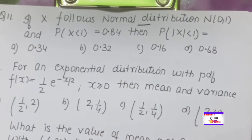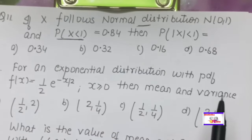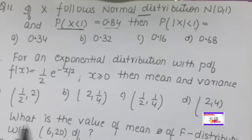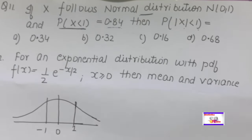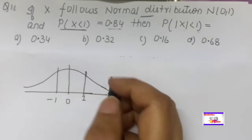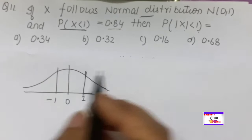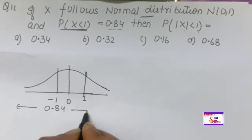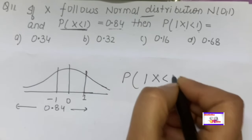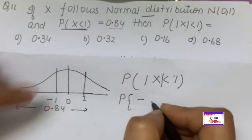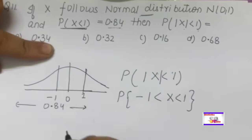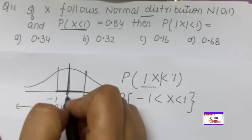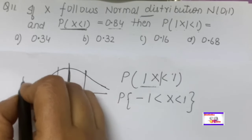If X follows a normal distribution and P(X < 1) = 0.84, find P(|X| < 1). For |X| < 1, we need the area from −1 to +1. Draw the standard normal curve — it is symmetrical. The total area to the left of 1 is 0.84. The area to the left of 0 is 0.5 (by symmetry). So the area from 0 to 1 is 0.84 − 0.5 = 0.34.